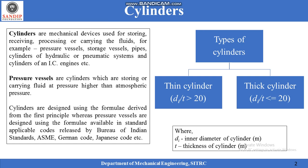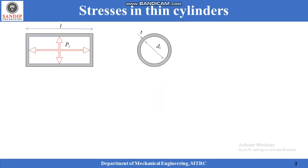On the basis of relative thickness of the cylinders with respect to the inner diameter, they can be divided into thin cylinders or thick cylinders. If the ratio of inner diameter to the thickness of the cylinder is greater than 20, then it is known as a thin cylinder. If the ratio is less than or equal to 20, then it is known as a thick cylinder.